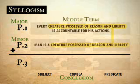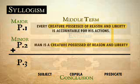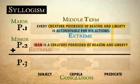The middle term is "creature possessed of reason and liberty." Now that we know the middle term, what would be the extreme in the major proposition? "Accountable for his actions." What would be the extreme in the minor proposition? "Man."